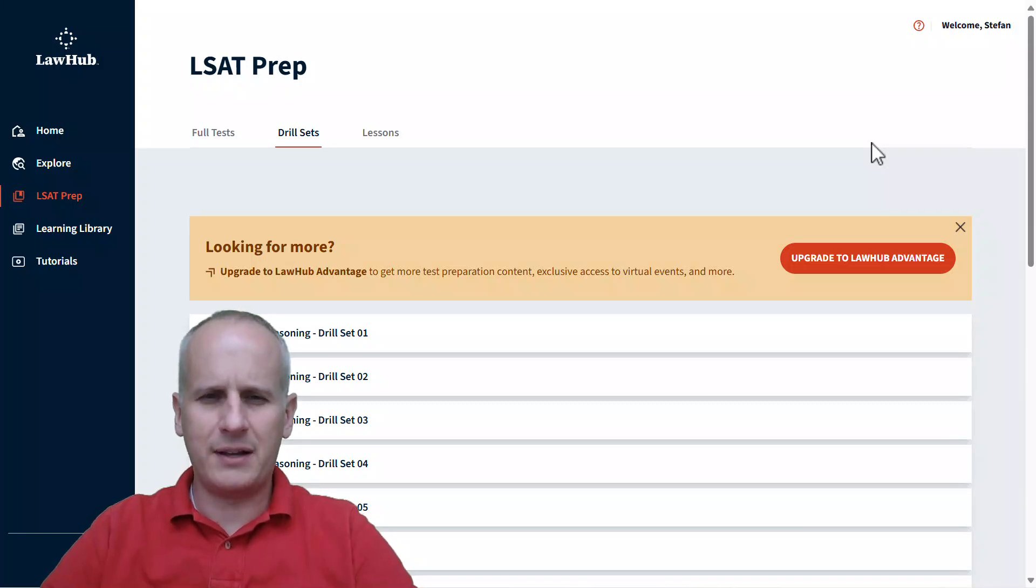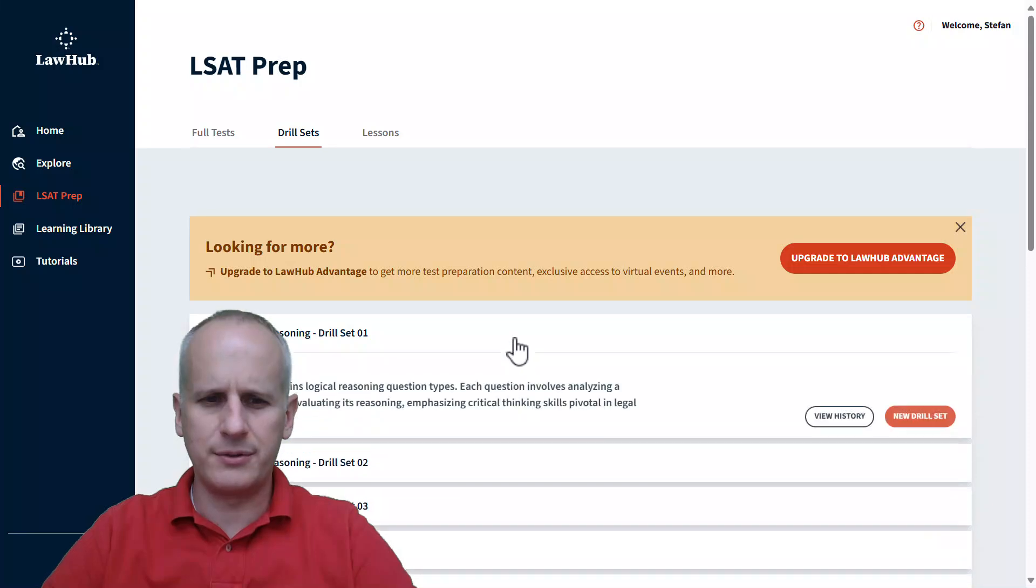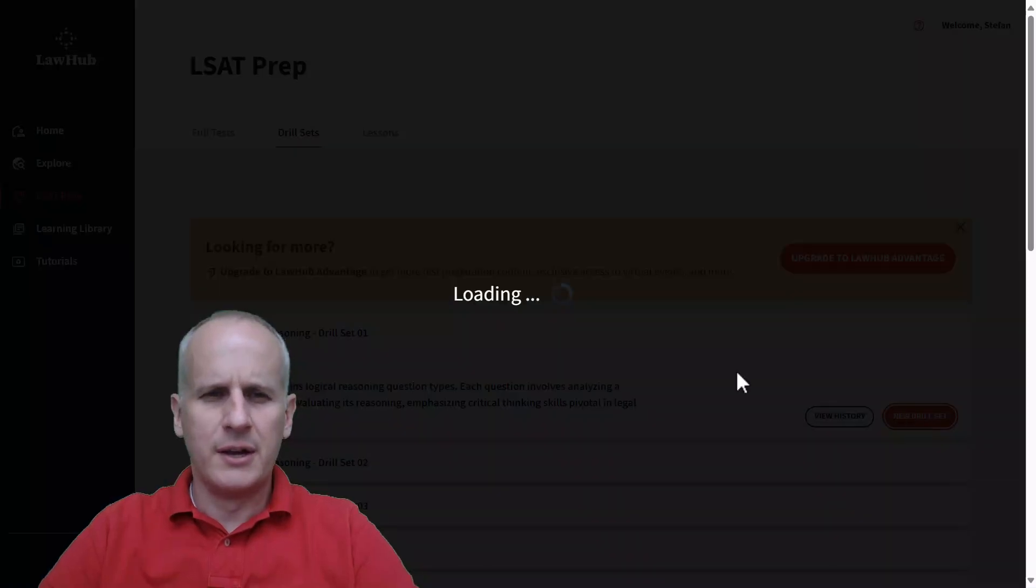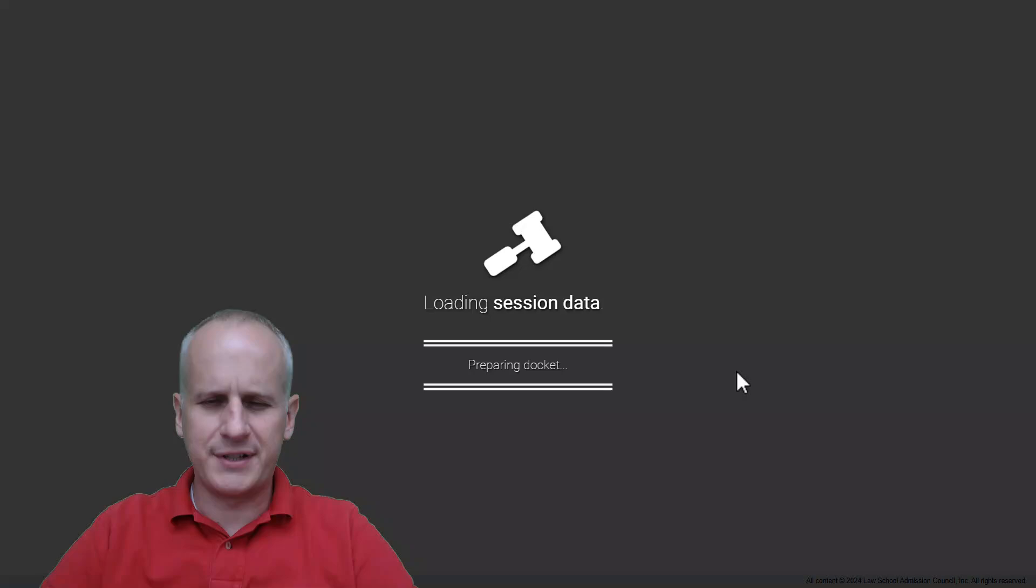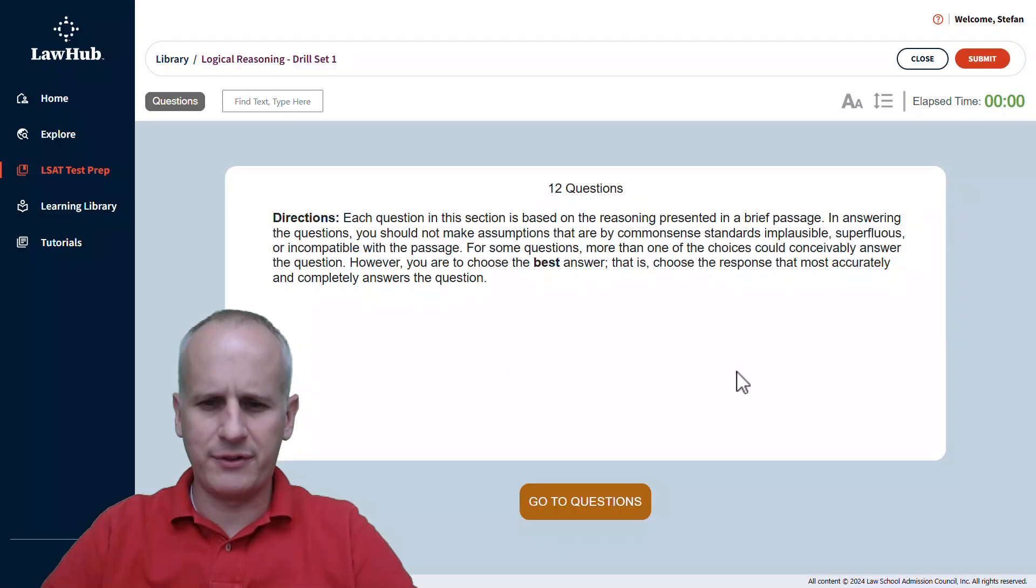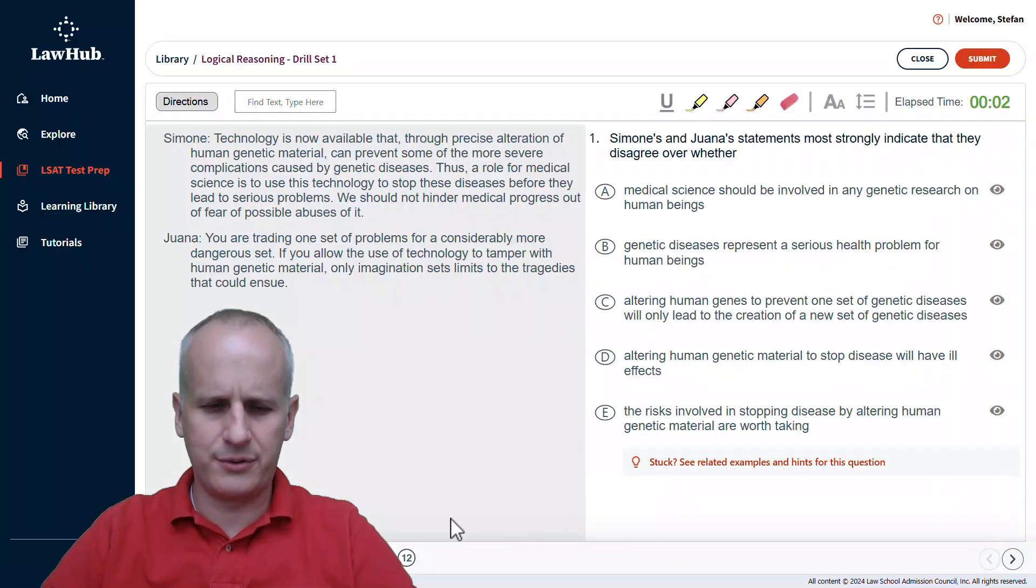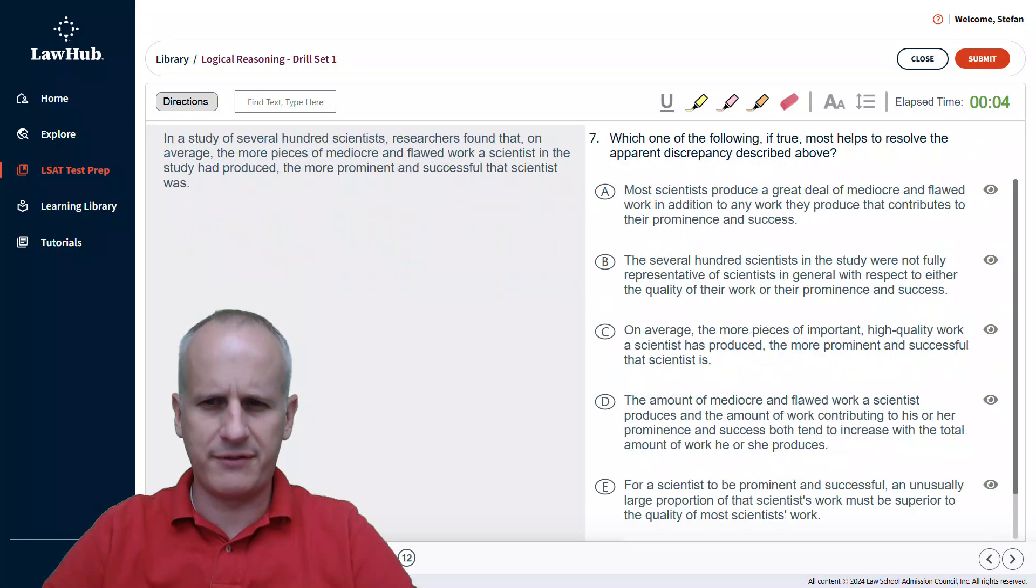Once again, we are here at lawhub.lsac.org, ready to go into Logical Reasoning Drill Set 1. So we'll go straight in with the new drill set. We'll let the hammer hammer away for a second, and we are going to go straight to question number 7, which is going to be asking about a specific type of question that you might recognize as a paradox task.